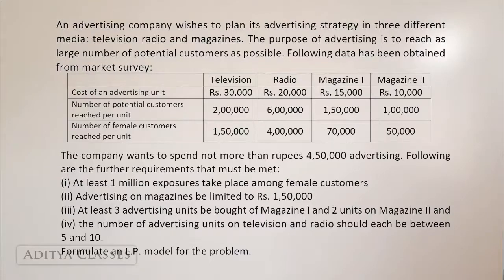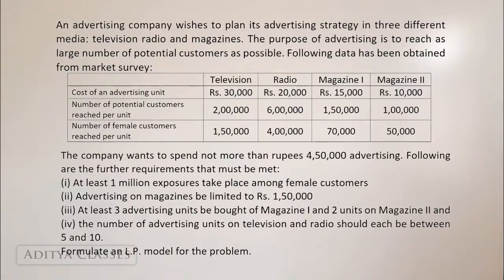Advertising on magazines must be limited to one lakh fifty thousand — you cannot spend more than that. At least three advertising units should be bought from magazine one and two from magazine two. The number of advertising units on television and radio should each be between five and ten. We need to formulate an LP model.